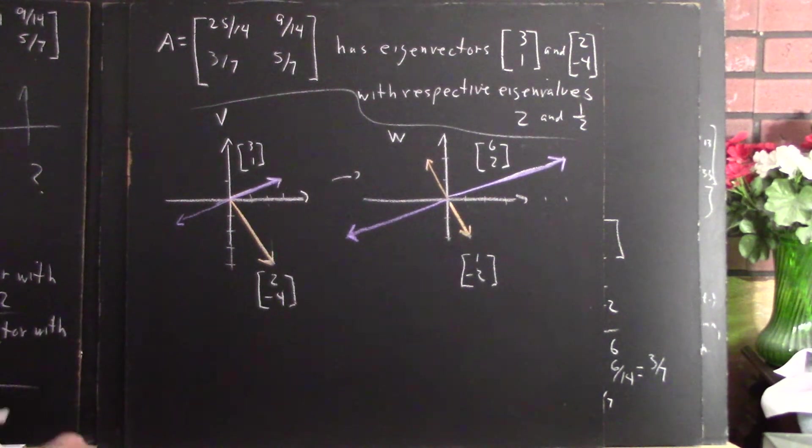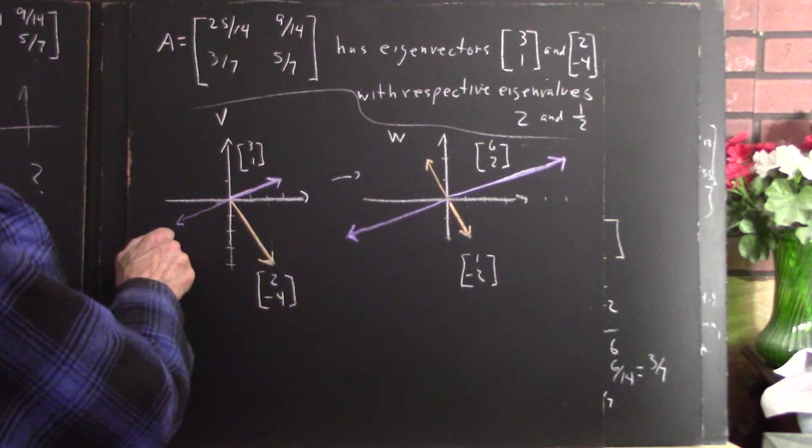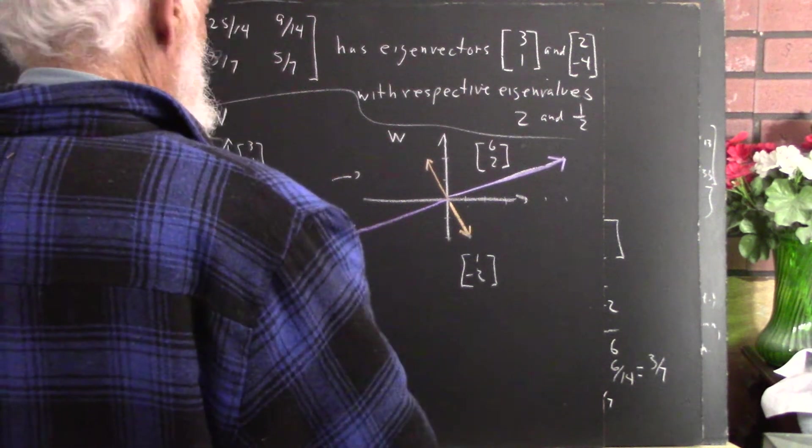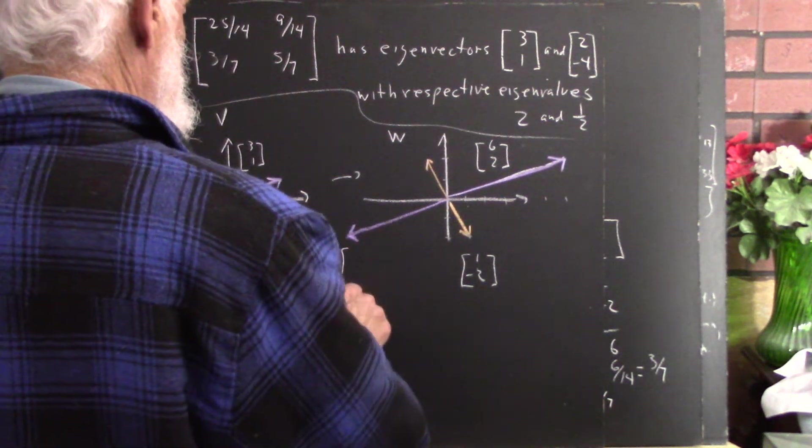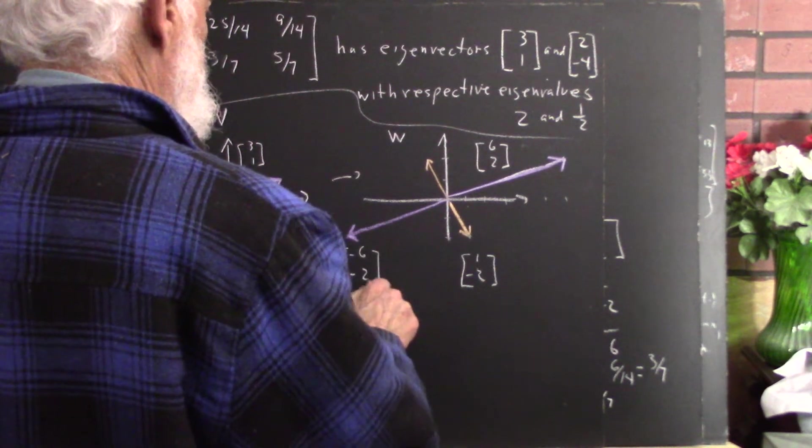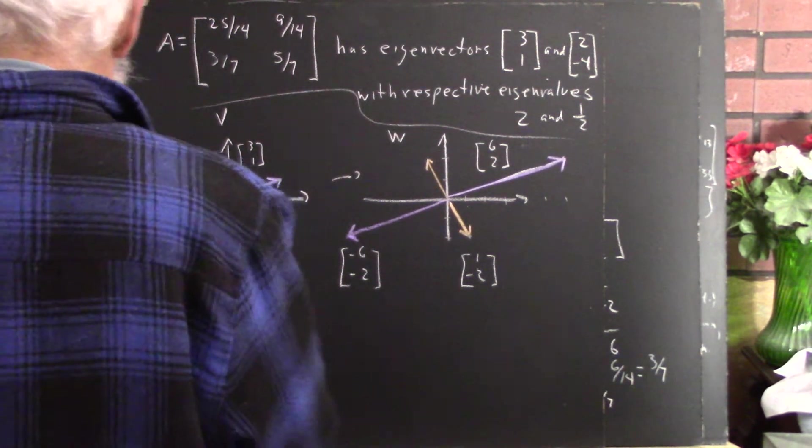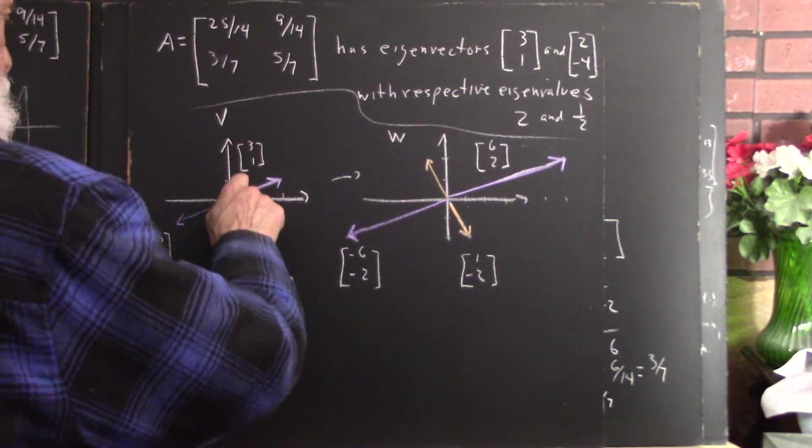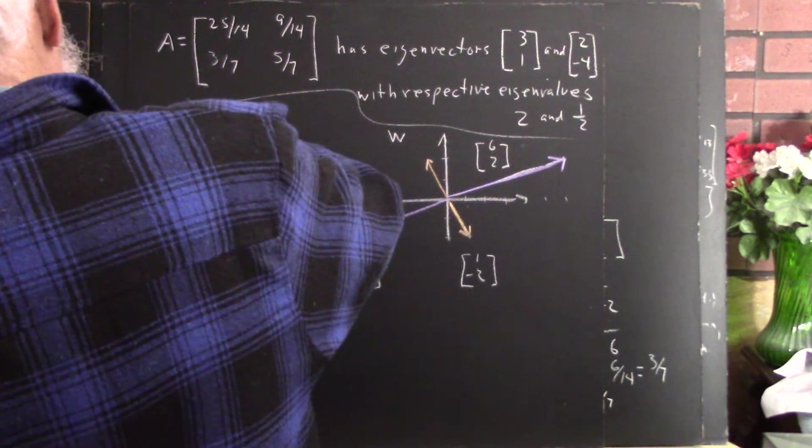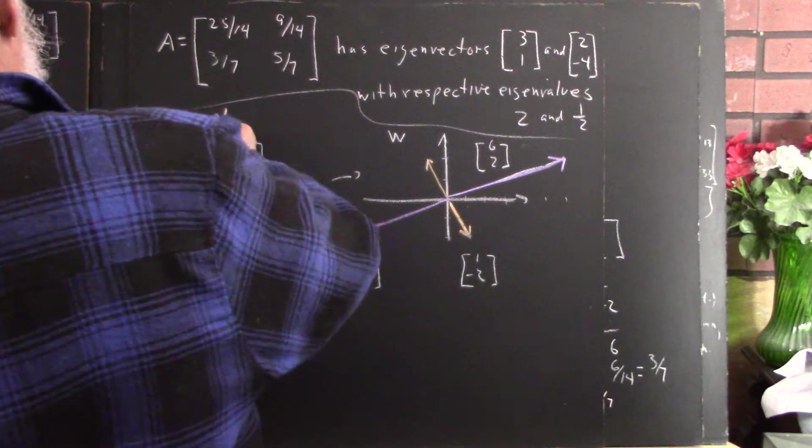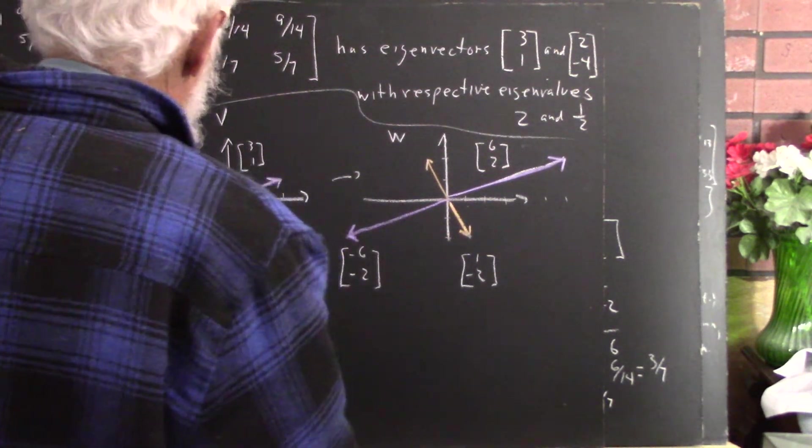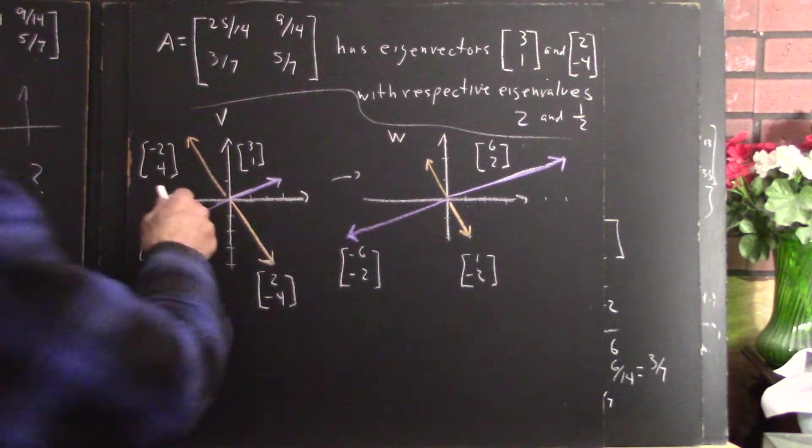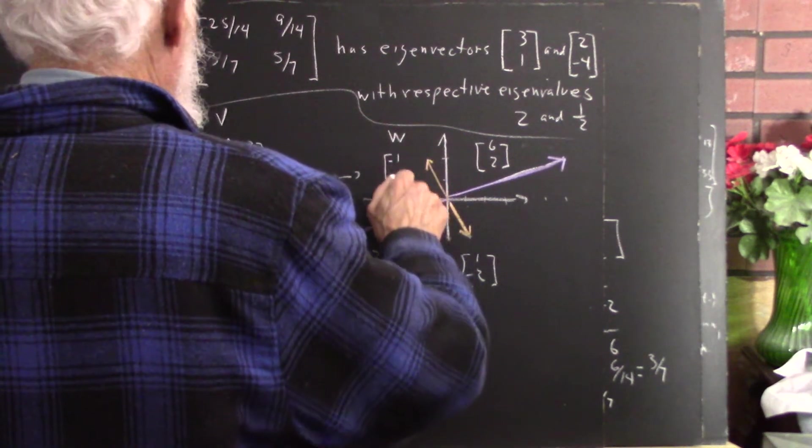So this vector is negative 3, negative 1, just the opposite of this one. So it maps to negative 6, negative 2, and I haven't done the vector negative 2, 4, but that vector would go up to about here. So let's just say that's it. And negative 2, 4 goes to negative 1, 2.